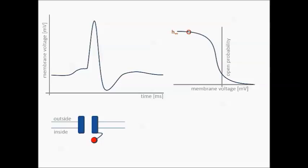The slower kinetics mean that the response of the inactivation gate to membrane potential changes will be delayed. Since this gate inactivates the channel, slower kinetics lead to a longer open state of the channel at the beginning of the action potential and to a prolonged inactivation after the action potential, keeping the channel inactivated for some time even though the membrane potential has already returned to its resting value. This period is called the refractory period, because no action potential can be elicited when the channel is inactivated. As the open probability of the inactivation gate increases over time, action potentials become more likely again.